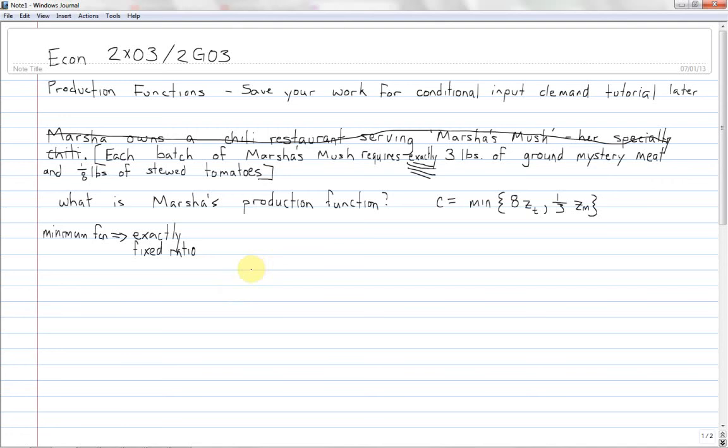Okay, so how do we get from now that we know what kind of function we're doing, how do we get these coefficients? Okay, well, to start off with, let's mathematize the words here. Okay, so I know that one chili requires three units of mystery meat. Okay, so that's the first step.